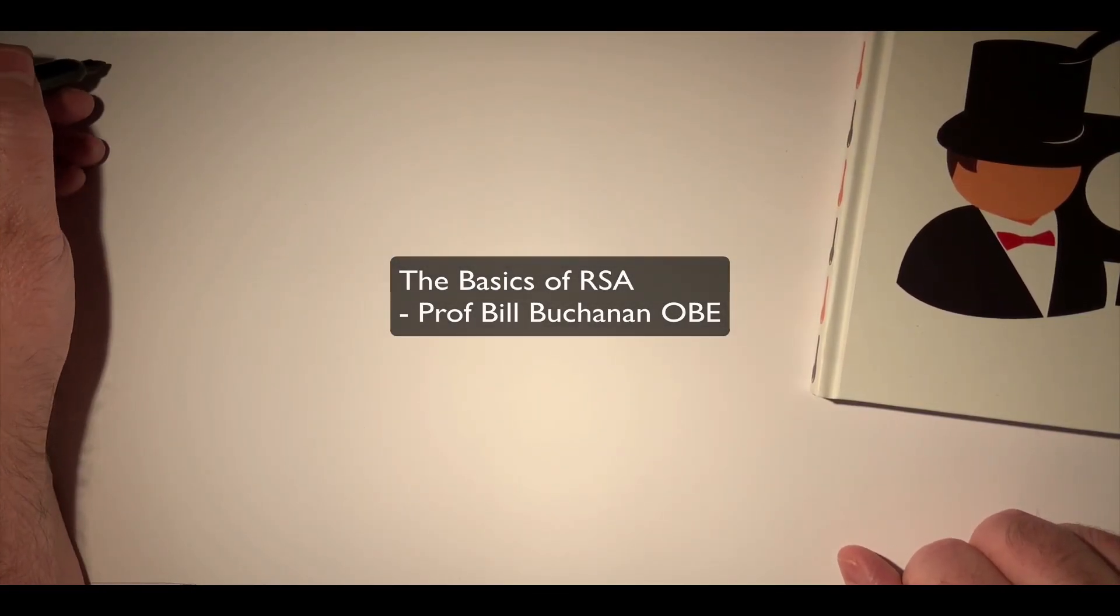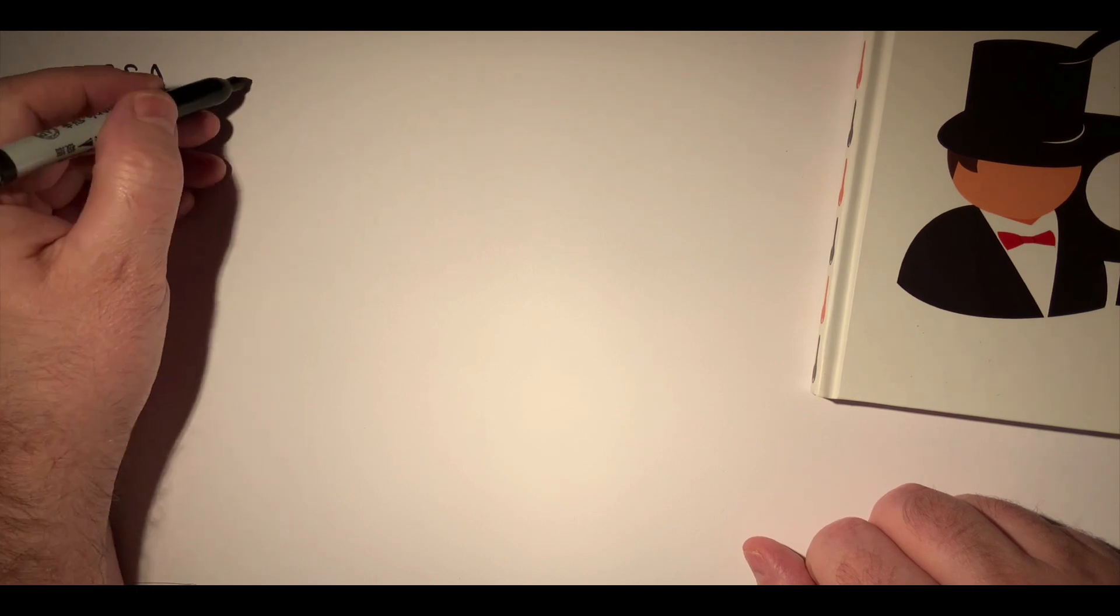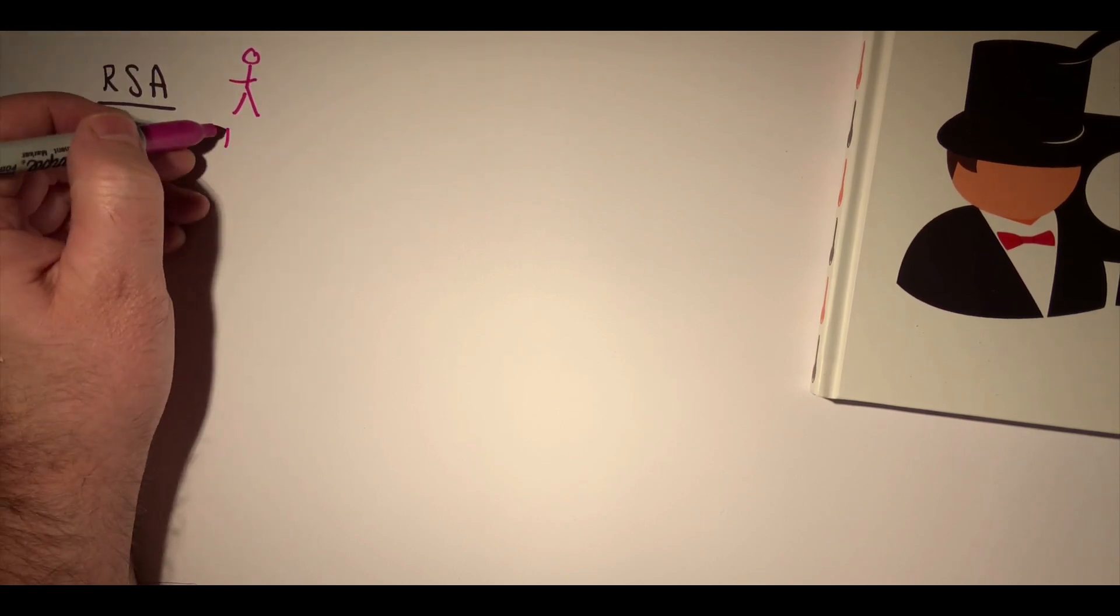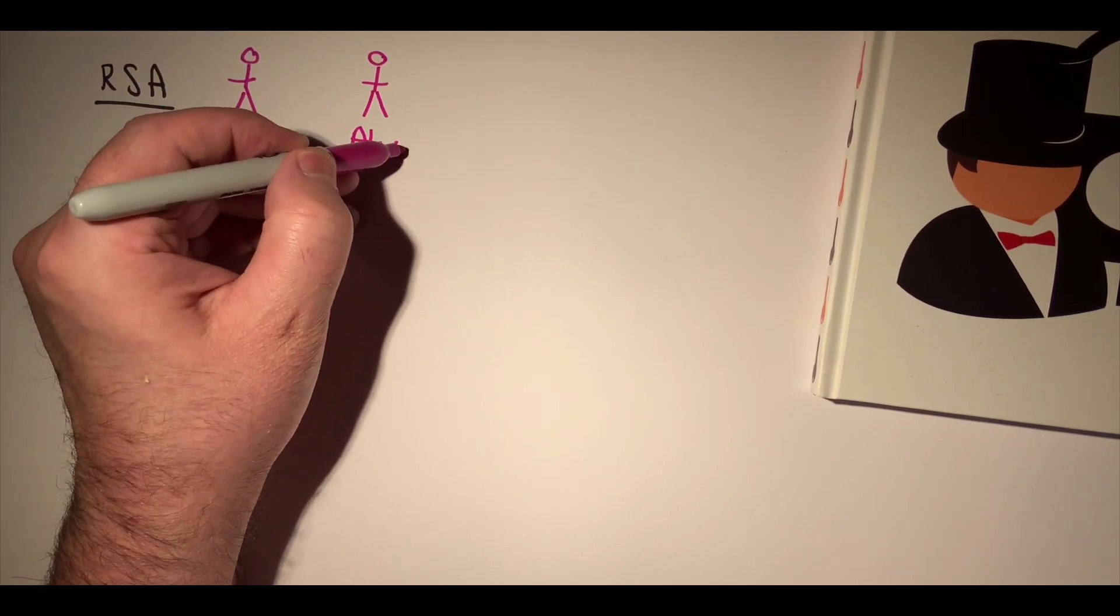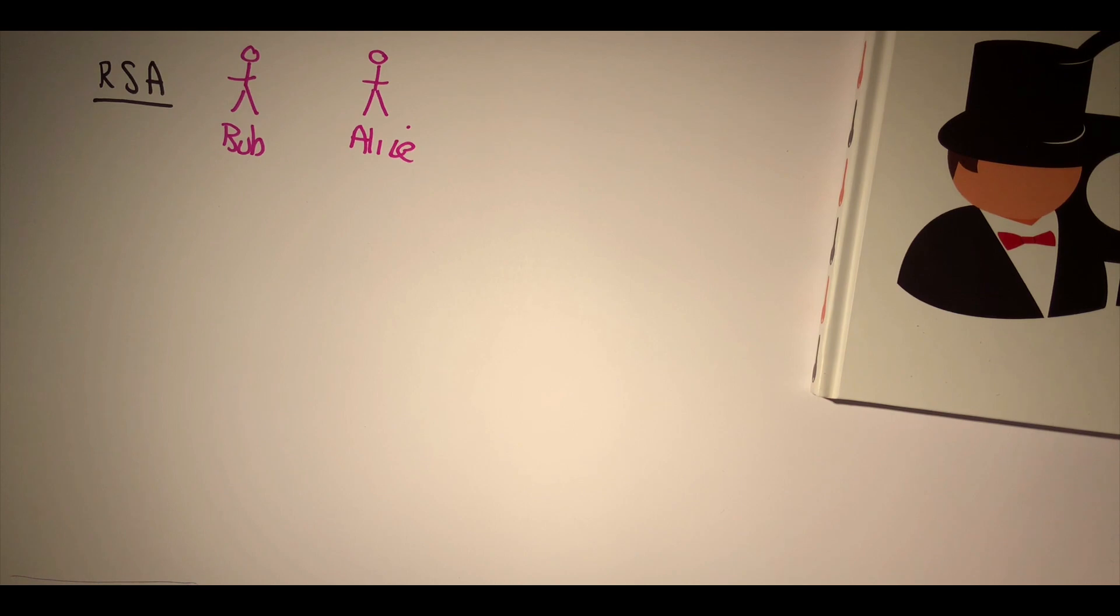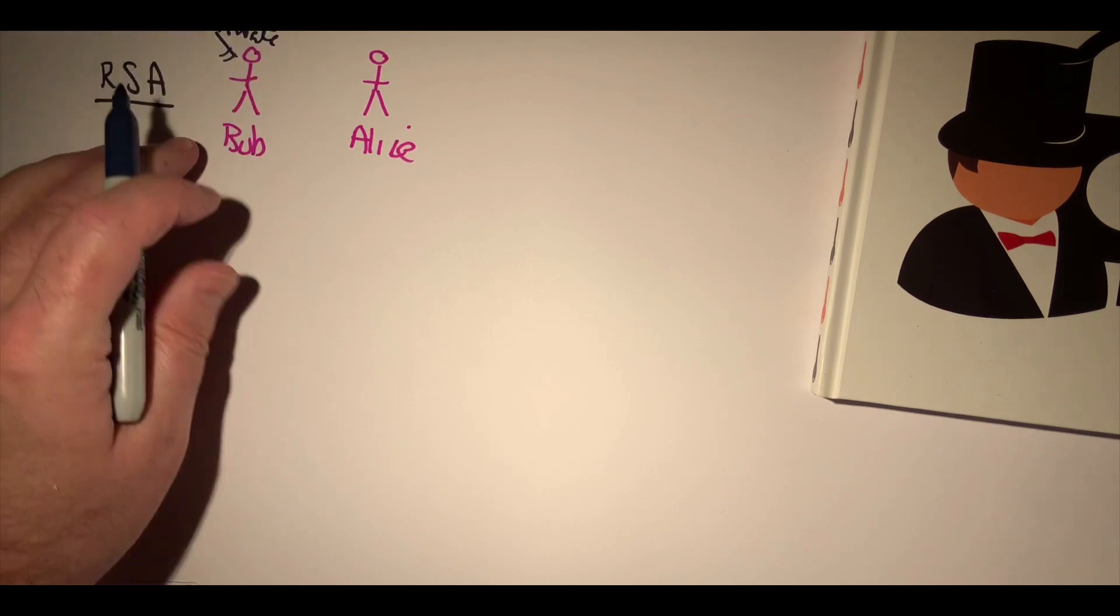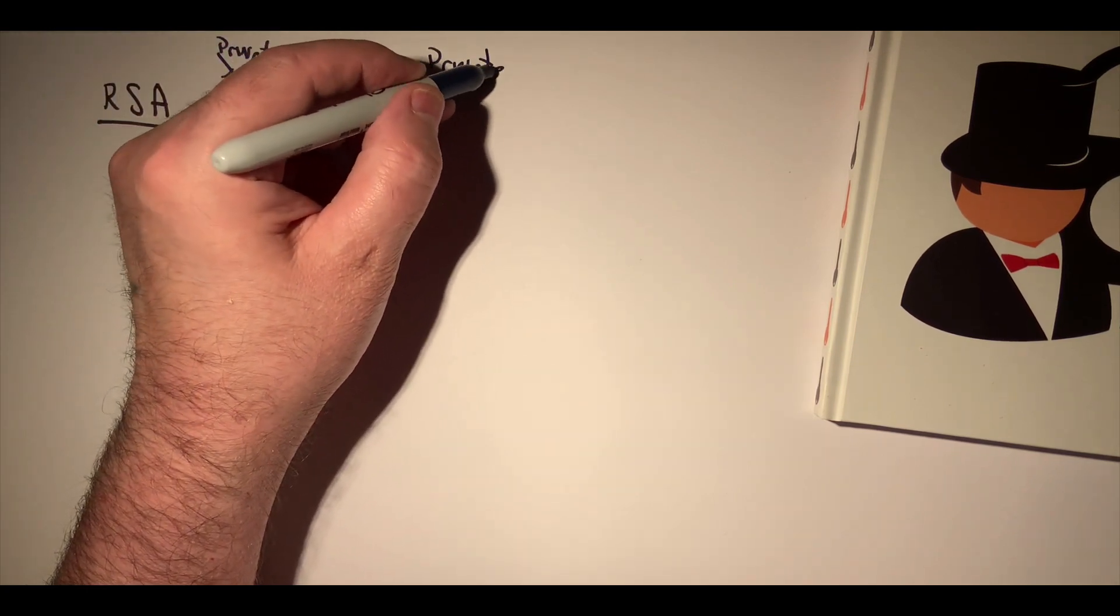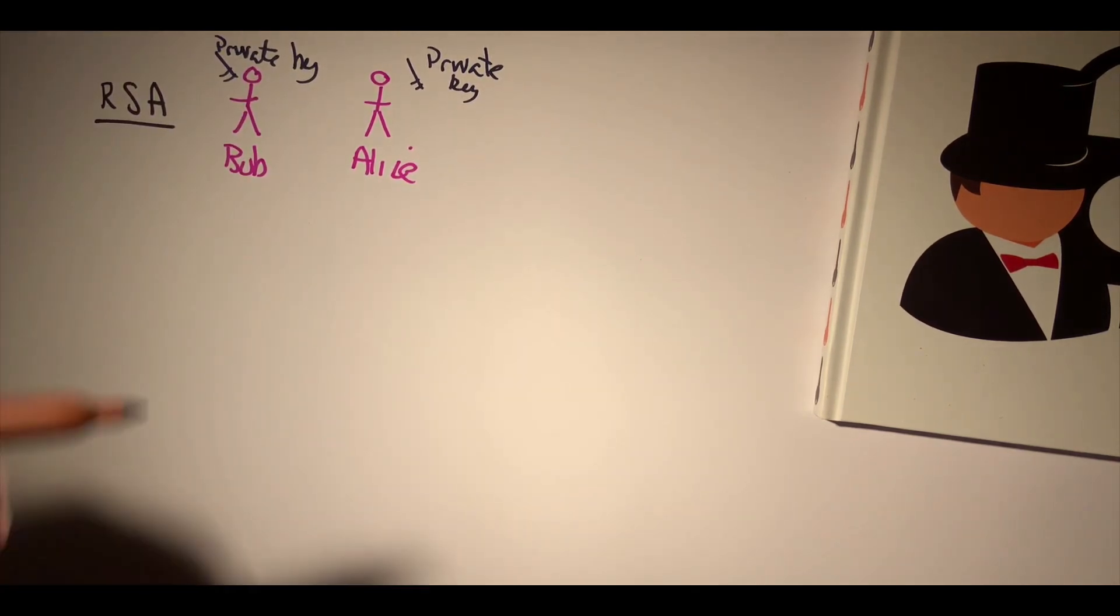Right, so let's look at the basics of the RSA method. With RSA, what we have is Bob and Alice. So here we have Bob and over here we have Alice. Bob has a public key and a private key. So here is his private key and here is Alice's private key. They then both have a public key.